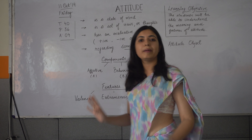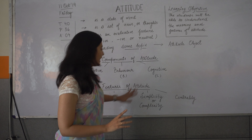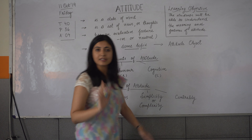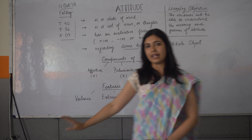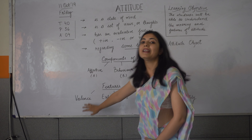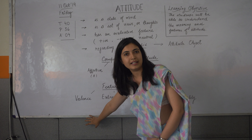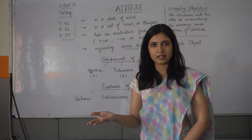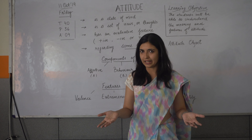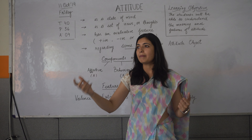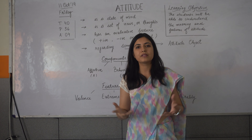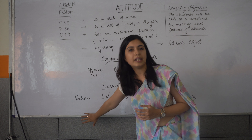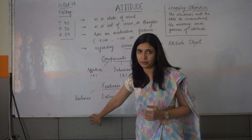So now we are going to talk about the features of attitude. Basically there are four features of attitude — an attitude has to be these four things. First is that an attitude must have a balance. Balance means either the attitude is positive or the attitude is negative. For example, about a healthy lifestyle, I am very positive — here positivity is the balance of my attitude.